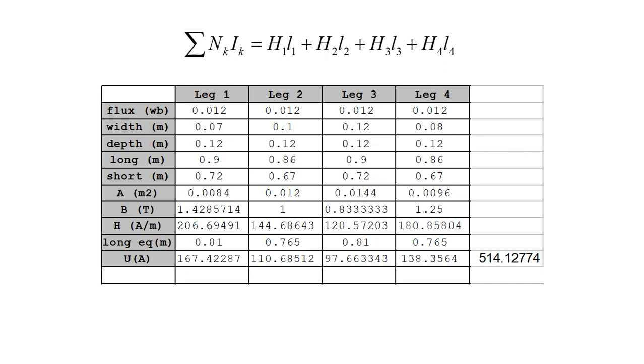That is 514 amperes. That should be equal to Ni. That should be equal to 1200i. From there, the current is 0.428 amperes. And that's how we solve that very simple magnetic circuit in the simplified manner, because we use the very gross approximation that μ is constant with a given value.